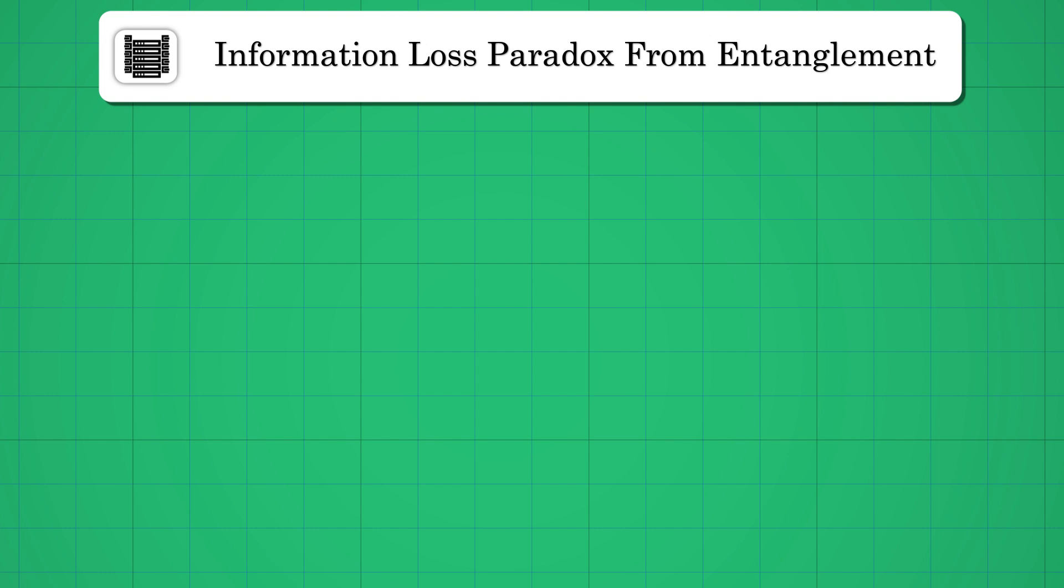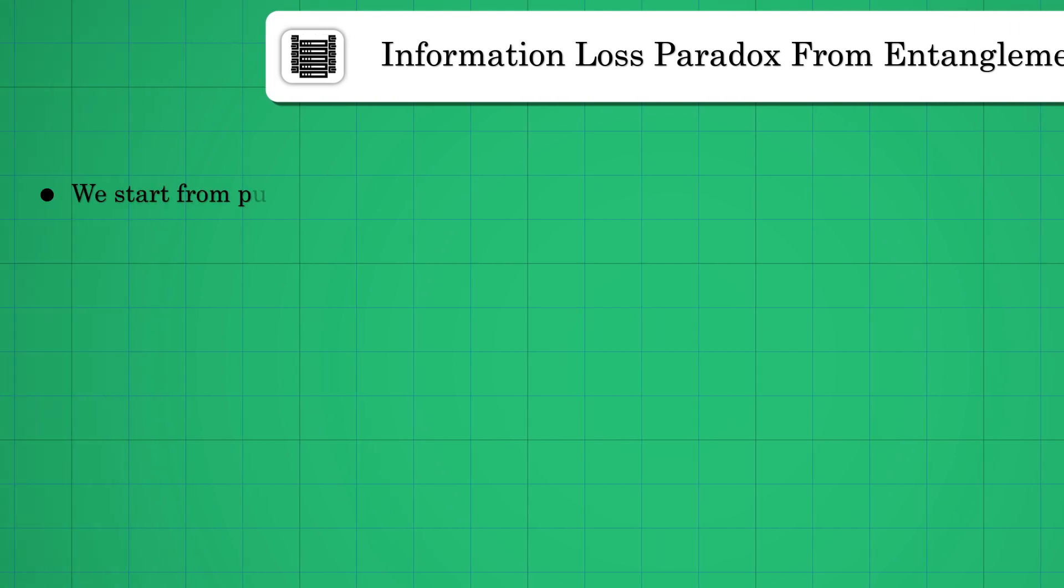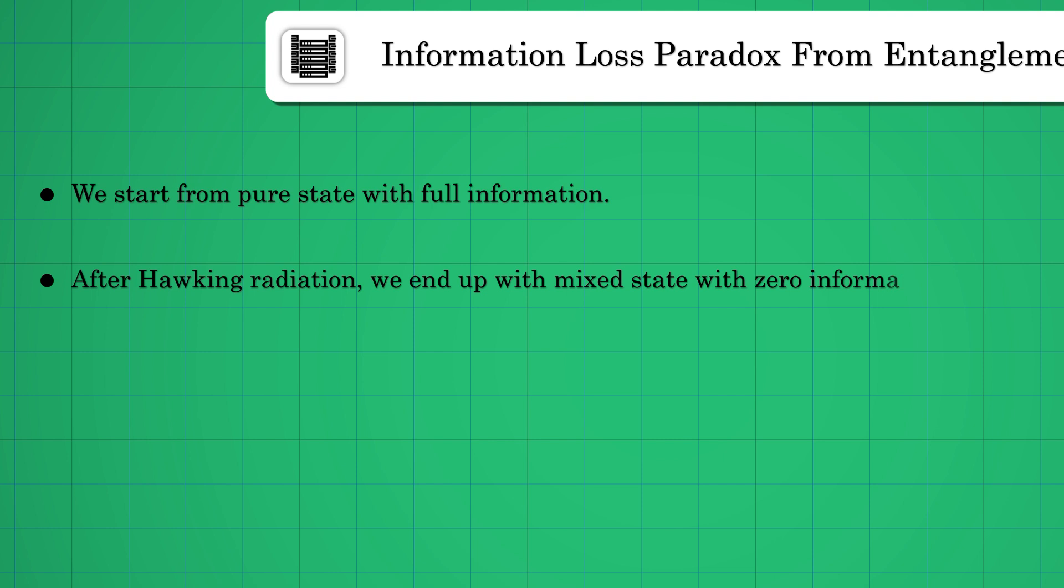Having done all this hard work, it is now time to reap the fruits. Let's formulate the information paradox in the language of entanglement. Imagine starting with a pure state which contains full information. This pure state could be anything like a star or a cup of coffee.